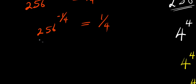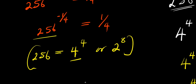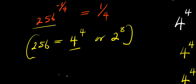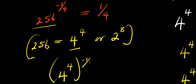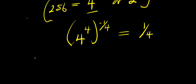Remember what I said earlier: 256 equals 4 power 4. So 256 is 4 power 4 — or 2 power 8 — let's make use of that. We have 4 power 4, and this is raised to the power of negative 1 over 4, equals 1 over 4. And don't forget our identity of a power n, power m equals a power n times m.